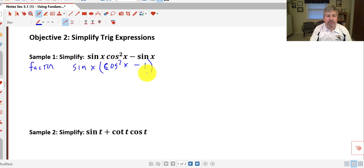And I'll factor out the negative 1, so I get the opposite of sine of x equals 1 minus cosine squared x. And then 1 minus cosine squared x is sine squared x, so I have the opposite of sine of x times sine squared x.